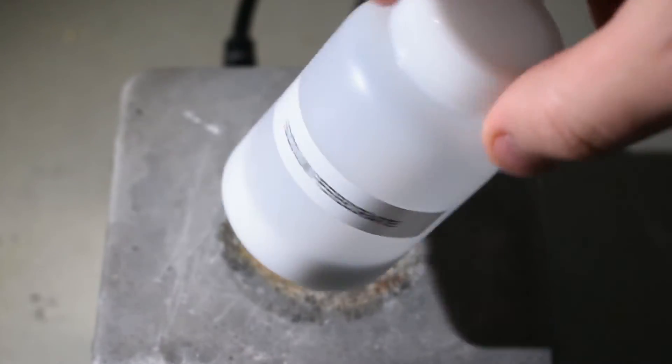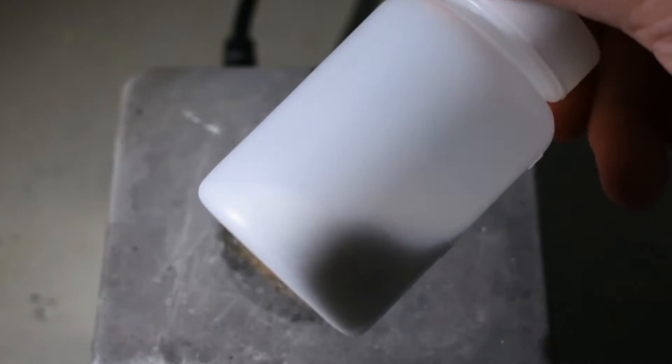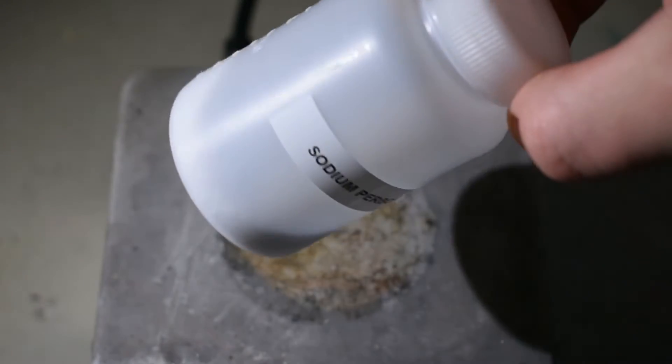Okay, here's the sodium perborate I got. It is roughly 20 grams of a white free-flowing crystalline powder.